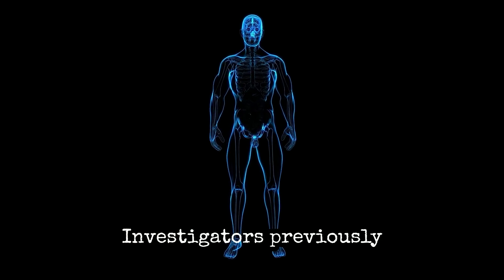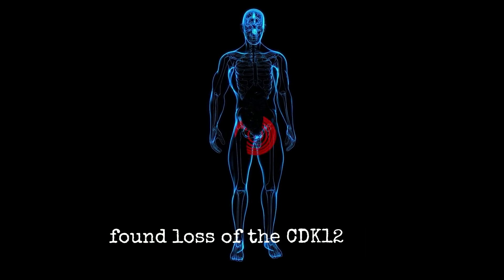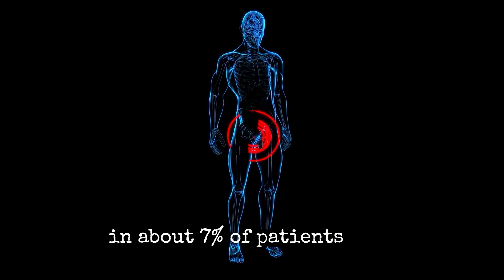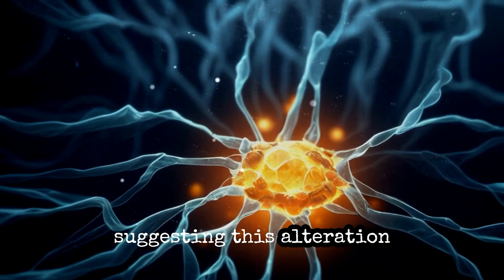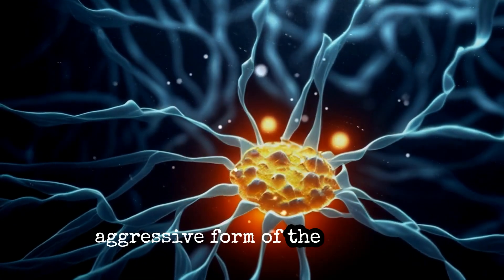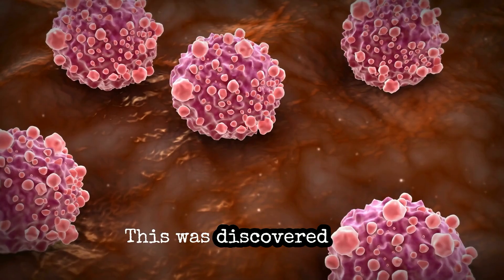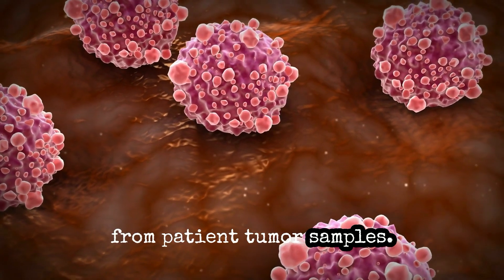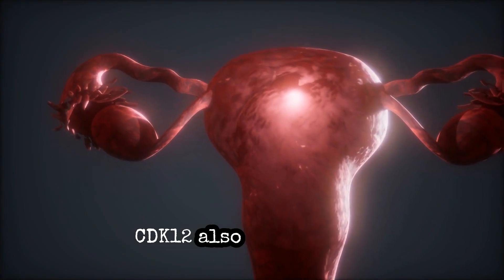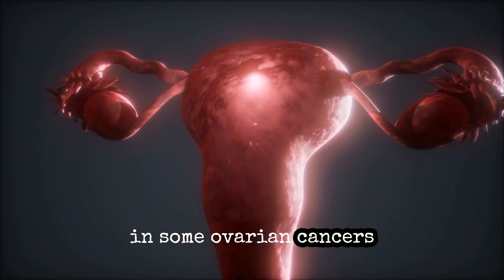Investigators previously found loss of the CDK12 gene in about 7% of patients with metastatic prostate cancer, suggesting this alteration may be linked to a more aggressive form of the disease. This was discovered from DNA and RNA sequencing from patient tumor samples. CDK12 also plays a role in some ovarian cancers.